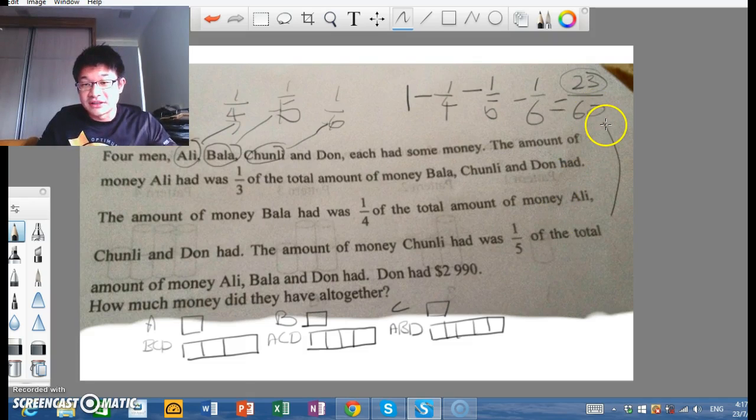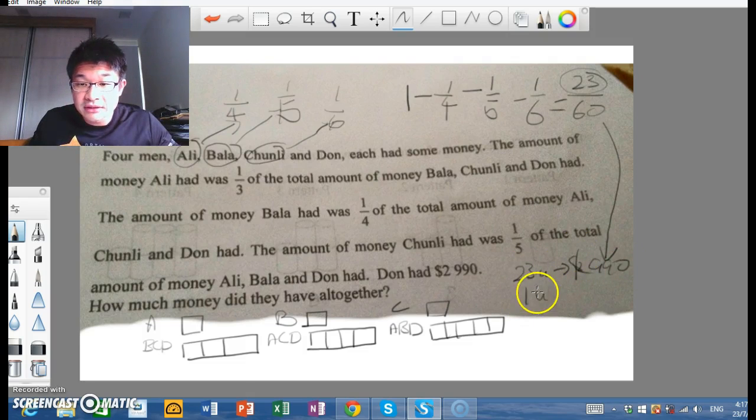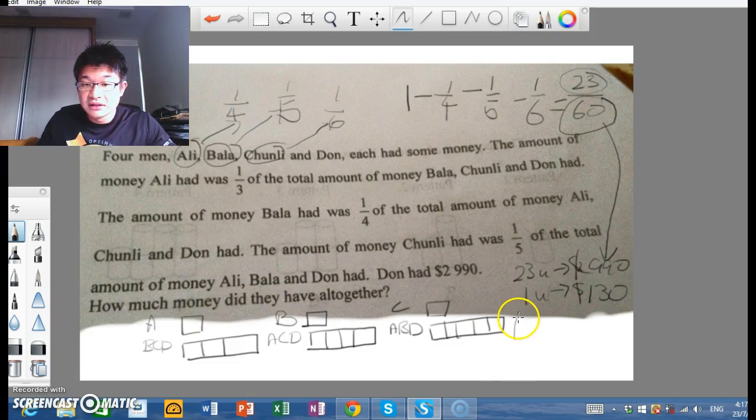So we move down here, yes, pardon the messiness today. 23 units would therefore be $2,990. So again, you go and find one unit, you should get $130. And then, when we talk about how much money did they have altogether, it is actually based on a total of 60 units. So 60 units would be $7,800.